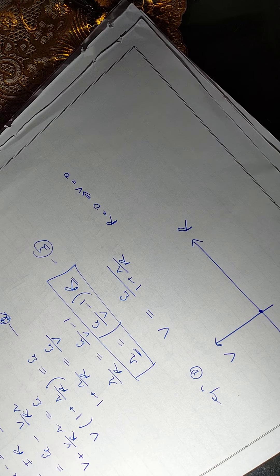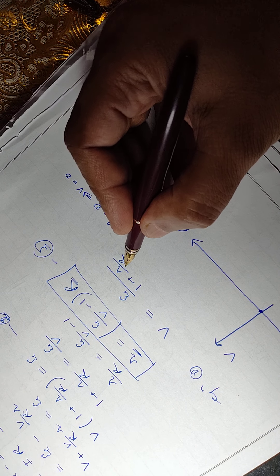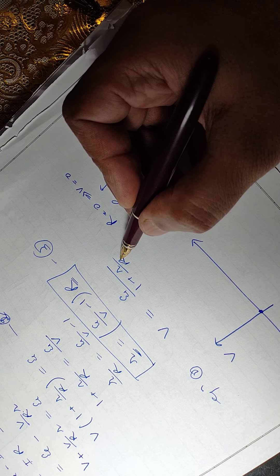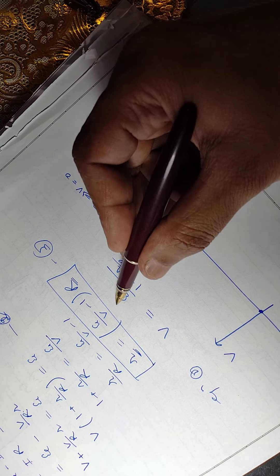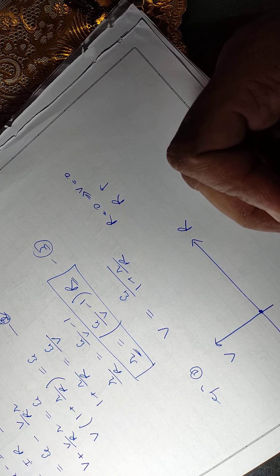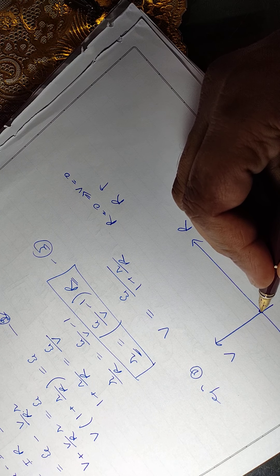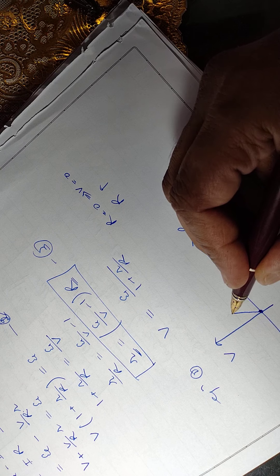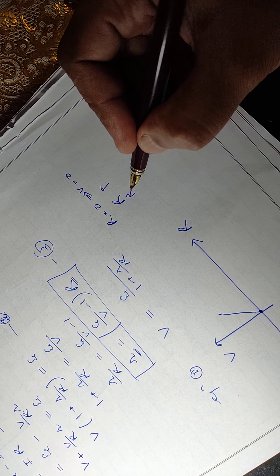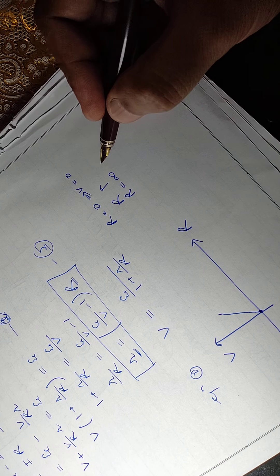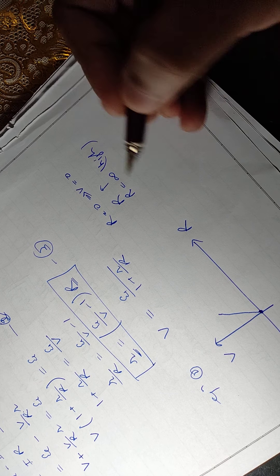So the graph will start from here. And as the value of capital R increases, the whole value will start to increase initially. So as R increases, V increases. But when R becomes very high, suppose that it tends to infinity, it's very high.